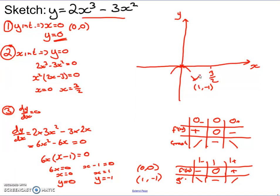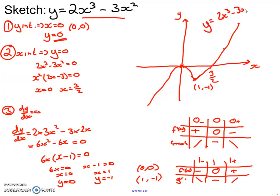Now we have all the key information: where it cuts the y-axis, where it cuts the x-axis, and the nature of both turning points. We can fill in the gaps: the curve shoots off to negative infinity on the left, comes up to the maximum at (0, 0), comes down to the minimum at (1, -1), cuts through x equals 3/2, and then shoots off to positive infinity.